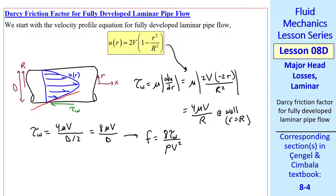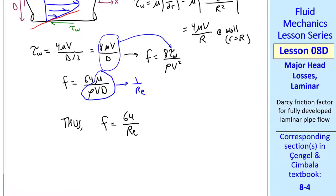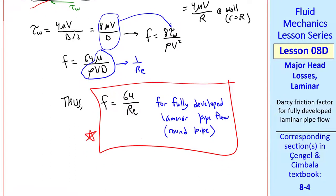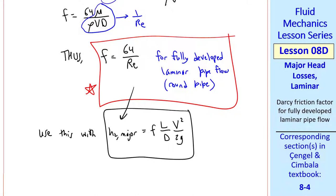Darcy friction factor F is 8 tau w over rho v squared. So plugging this in for tau w gives F equal 64 mu over rho v D. And everyone should recognize by now that this is 1 over Reynolds number. Thus, F equals 64 over Reynolds number for fully developed laminar pipe flow for a round pipe. So this is the equation for Darcy friction factor that we'll use any time we encounter long straight sections of pipe where the flow is laminar.